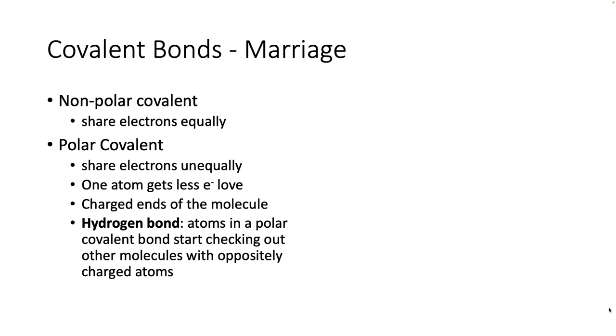So I always think of covalent bonds as like a marriage. You are really sharing everything. You are sharing these electrons. But some marriages are more equal than other marriages, right? So non-polar covalent bonds are sharing those electrons equally, like the carbon and the hydrogen molecules we talked about first. And other marriages are not sharing equally. Polar covalent bonds share electrons unequally. And what happens because of this is that one of the atoms gets a little bit less time with the electrons. And this causes these sort of partial charged ends to the molecule.